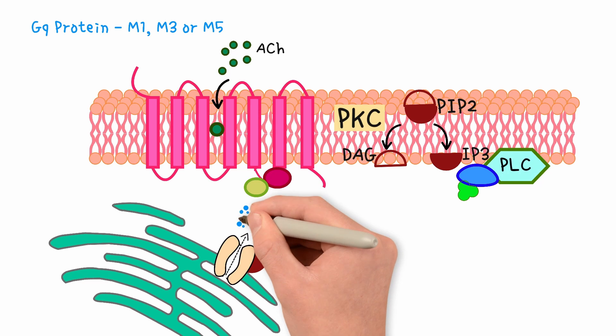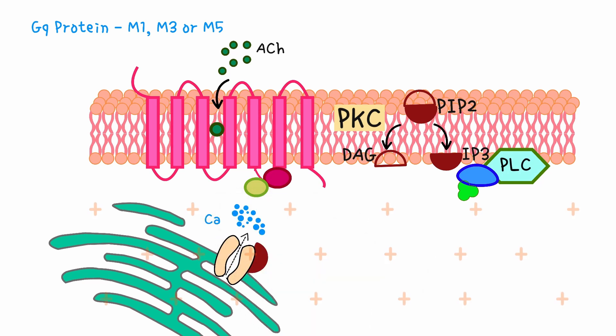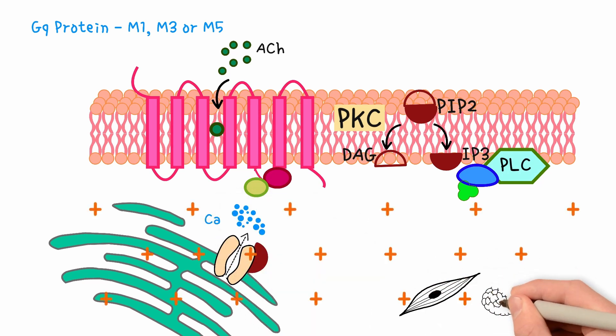Elevated intracellular calcium is the main trigger for smooth muscle contraction and the release of fluids and hormones from glandular tissue.